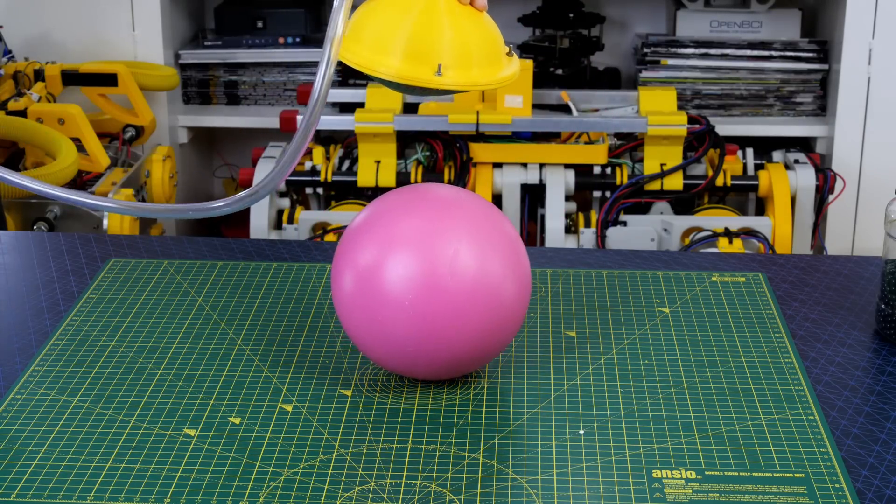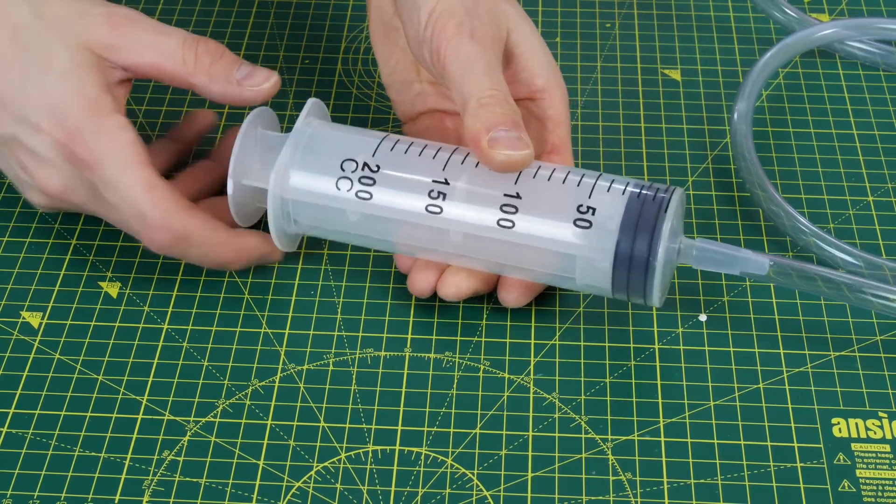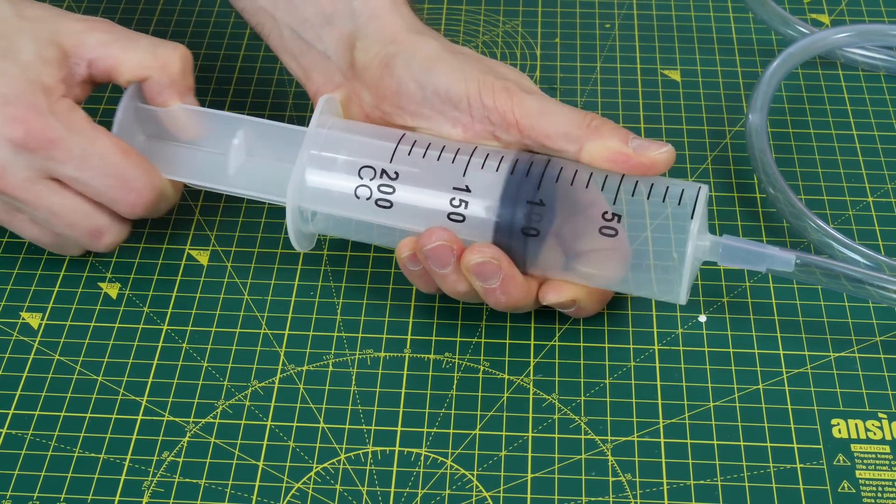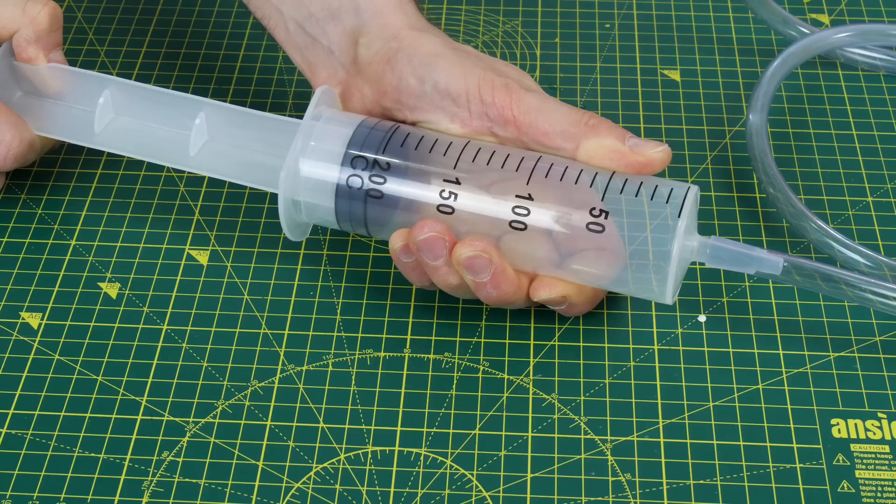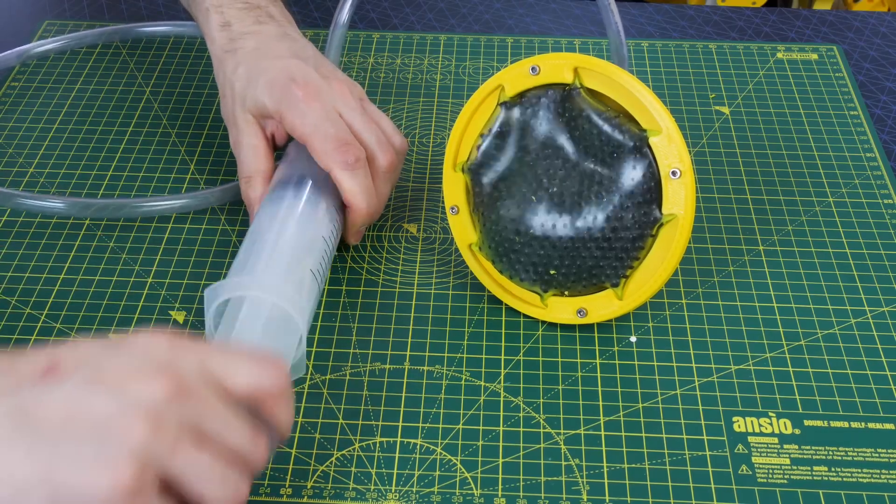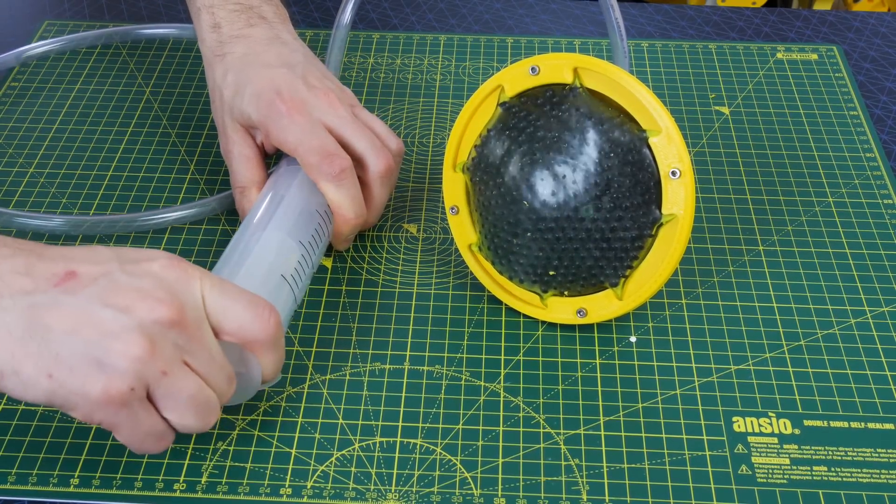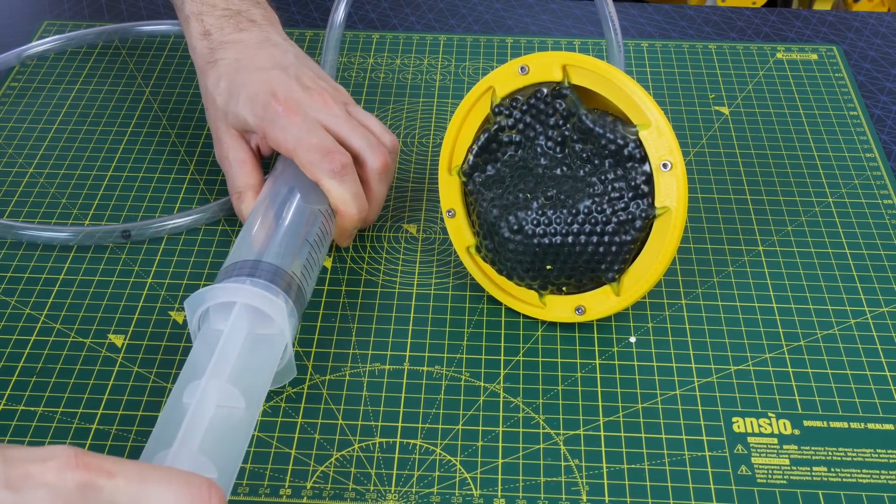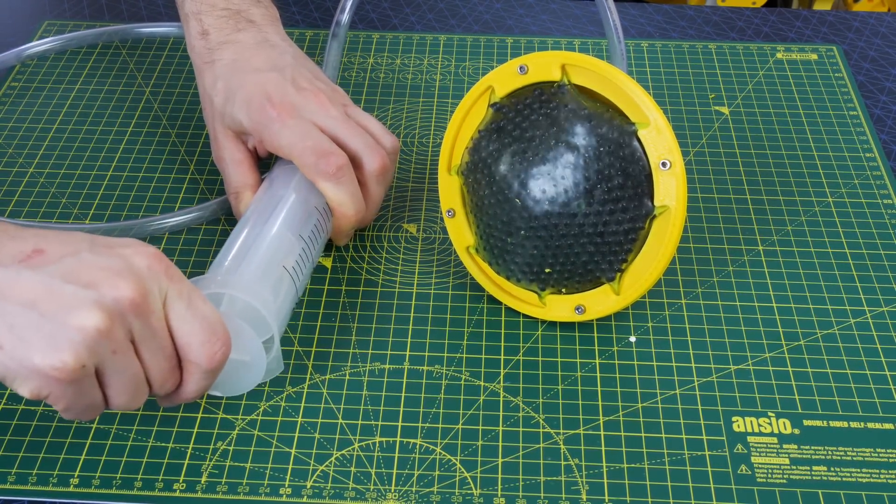Yep, just about, not sure how well it'll stay in there, but I'm pretty bored of sucking the air out with my lungs so I bought this massive syringe which is 200 cubic centimeters. It looks like it'll work and there should be enough capacity there to remove all the air, but we're going to need something pretty hefty to pull that back.